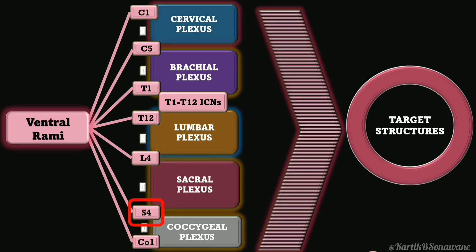T1 and T12 are an exception — they do not form plexuses. Instead, they continue as individual intercostal nerves supplying the thoracic wall directly. Thus, intercostal nerves are nothing but the anterior rami of the thoracic spinal nerve.